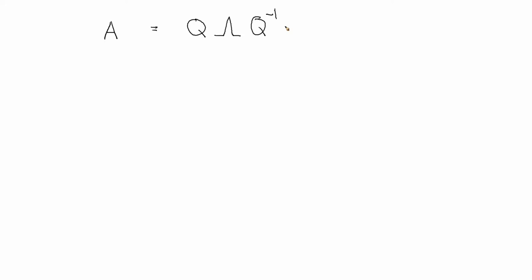So this thing is called an eigenvalue decomposition of A. In words, what's on the right side of the equal sign is the eigenvalue decomposition of A, of the matrix A.